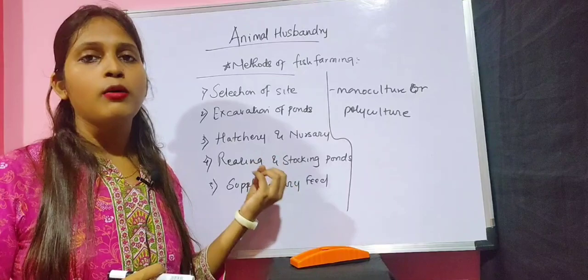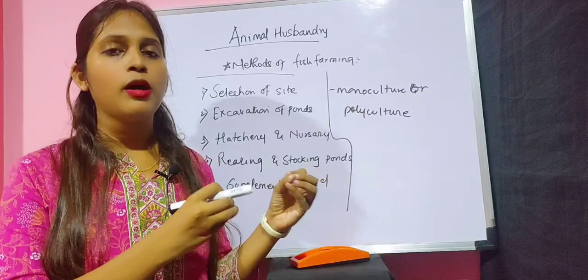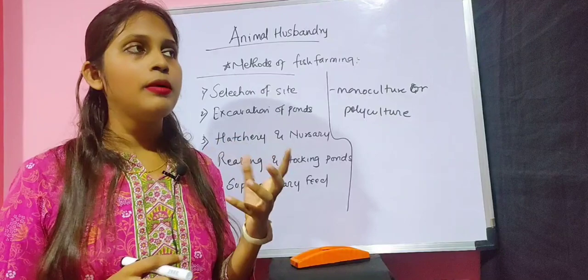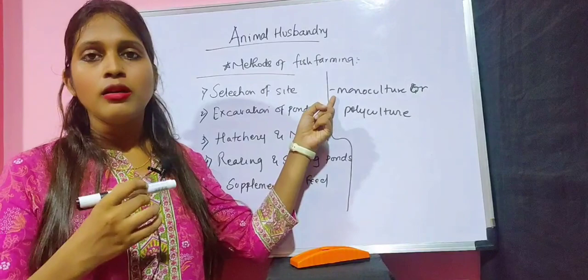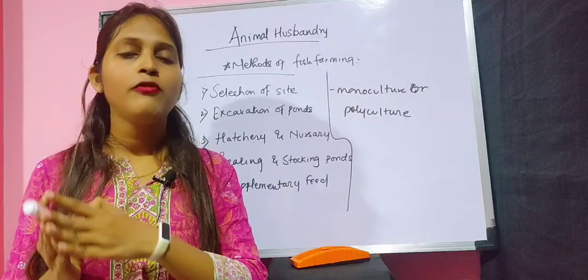Fish farming can be practiced as monoculture or polyculture. Monoculture means rearing only one species of fish at a time, for example only Bombay duck or only mackerel. Polyculture means rearing many species at a time — fishes along with oysters, crabs, etc.